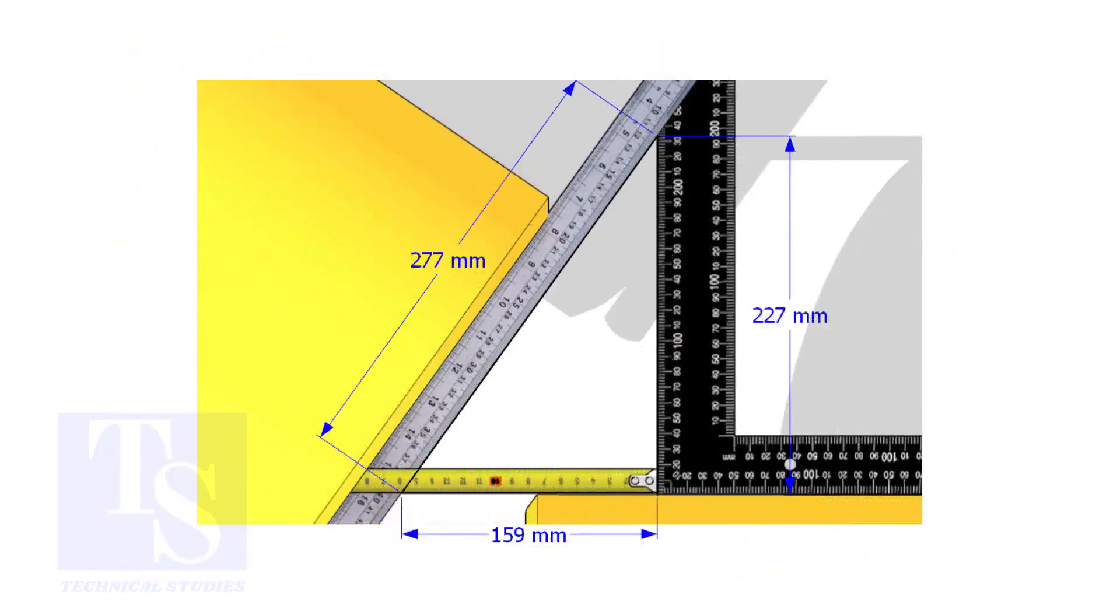Assume that these are the dimensions. Let us calculate the included angle. If you apply the sine rule, the angle will be 159 divided by 277, shift sine.